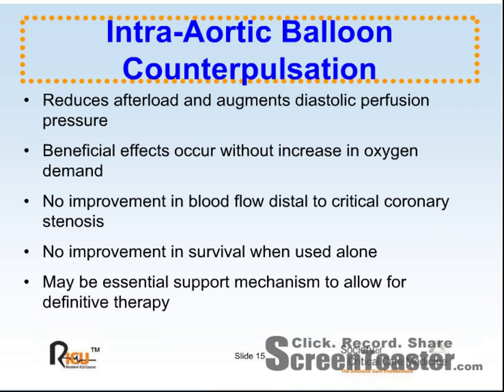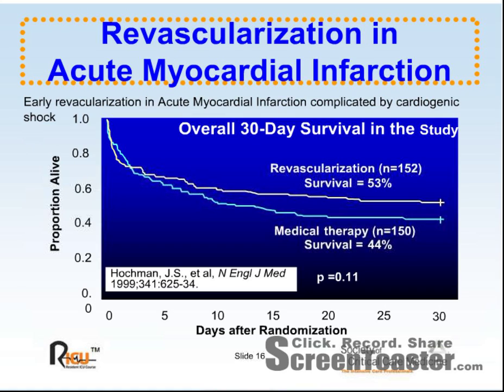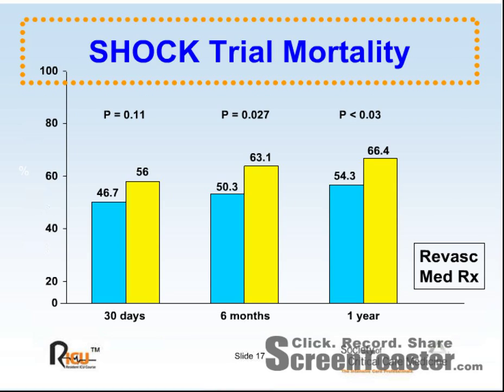Balloon counterpulsation likely does not improve outcomes unless combined with coronary revascularization. The landmark SHOCK trial prospectively randomized 302 patients with cardiogenic shock due to acute myocardial infarction and left ventricular failure to either emergency early revascularization with PCI or bypass surgery versus initial medical stabilization with drug therapy and balloon counterpulsation. The 30-day survival was higher in the revascularization group, although this did not reach statistical significance; however, at 6 months and 1 year, statistical significance was reached.